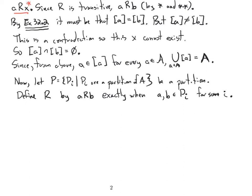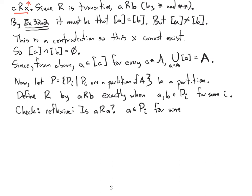Define the equivalence relation R by: a is related to b exactly when a and b are elements of the same subset P_i in our partition, for some i. We just need to show that this defines an equivalence relation, so we need to check that this is reflexive, symmetric, and transitive. Let's do reflexive first: is a related to itself? Well, a is in some subset of our partition, because partitions partition a set and every element is in exactly one of these subsets. So yes, a is related to itself.